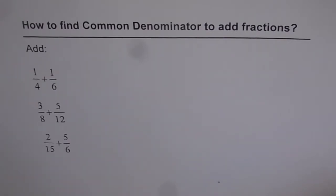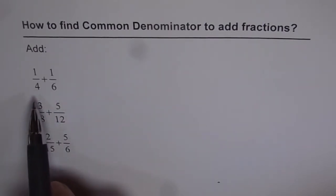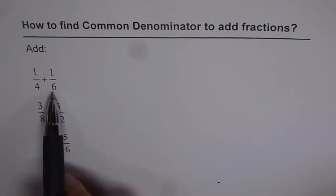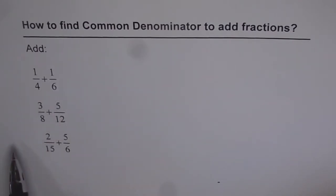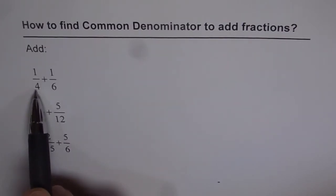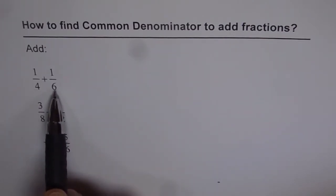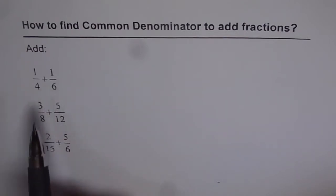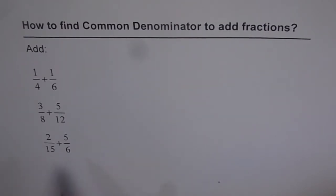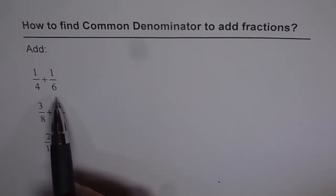Now to add fractions we should have same denominators. In the first example the denominator is 4 and 6. They are not equal. Now to make them equal we can multiply 4 by 6 and get 24, and we can multiply 6 by 4 to get 24, and make the common denominator and then add them. But the idea is that if I do that then I make 24 which is a big number. Can I make a lower common denominator?